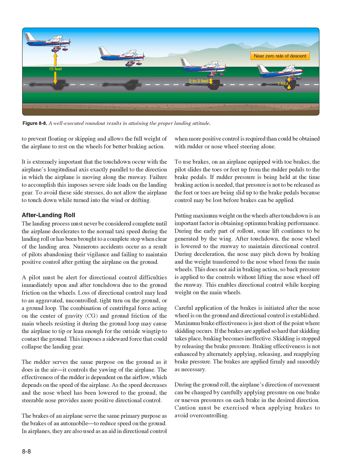Loss of directional control may lead to an aggravated, uncontrolled, tight turn on the ground, or a ground loop. The combination of centrifugal force acting on the center of gravity (CG) and ground friction of the main wheels resisting it during the ground loop may cause the airplane to tip or lean enough for the outside wingtip to contact the ground, imposing a sideward force that could collapse the landing gear. The rudder controls the yawing of the airplane on the ground, and its effectiveness depends on airflow. As speed decreases and the nose wheel is lowered to the ground, the steerable nose wheel provides more positive directional control. Brakes are used as an aid in directional control when more positive control is required than could be obtained with rudder or nose wheel steering alone.